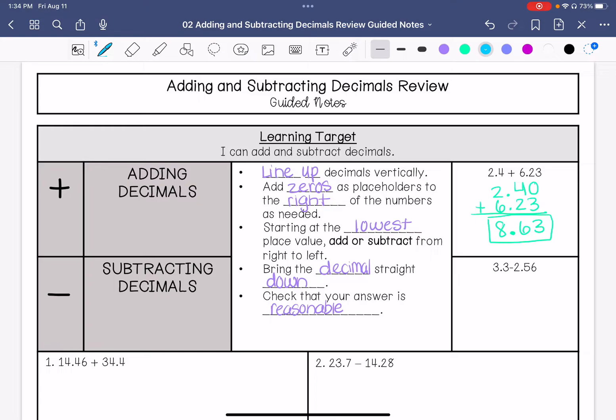Now we are going to do 3.3 minus 2.56. So 3.3, line the decimal up, 2.56. Add our zero placeholder. And we are subtracting this time. We have to borrow from this. 10 minus 6 is 4. We're going to have to borrow again. 12 minus 5 is 7, and then 2 minus 2 is 0. Bring down the decimal point. 0.74 is our answer.